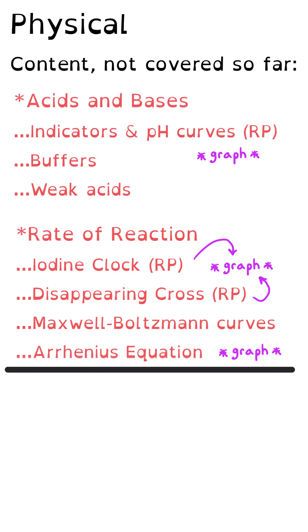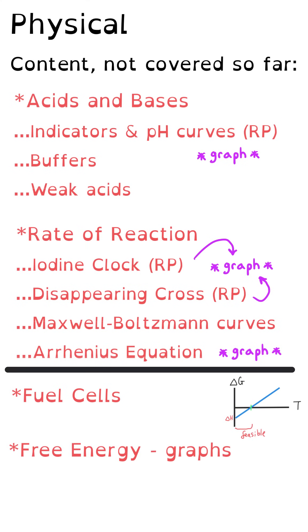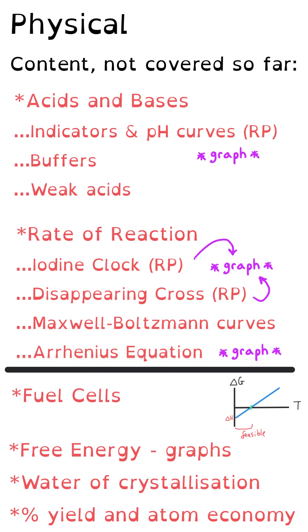Some things are less likely but could still come up. Fuel cells — nothing about that so far. There's also an electrochemistry required practical, though similar content has already appeared. Free energy: there's been some thermodynamics relating to entropy, but not the free energy graphs and the point at which a reaction becomes feasible. From the amount of substance topic, we haven't had anything about water of crystallisation, percentage yield, or atom economy.